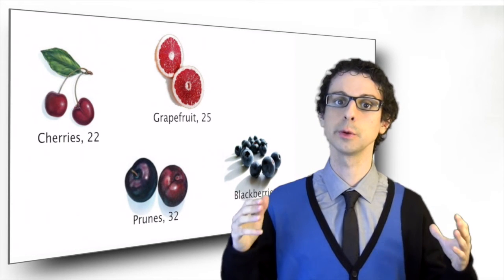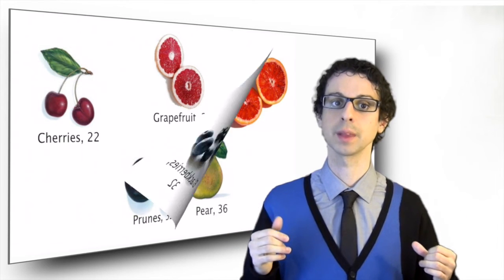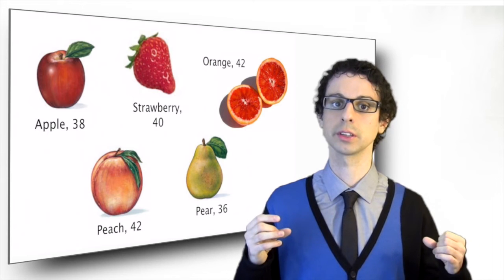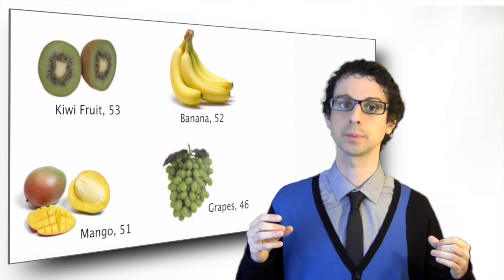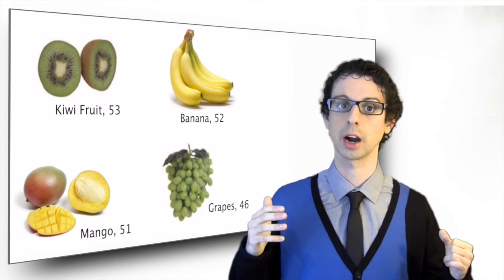Some fruits such as cherries, blueberries, prunes and grapefruit have a GI between 20 and 30. Apples, pears, peaches, strawberries, oranges between 30 and 40. Kiwi, mango, grapes and bananas between 40 and 50, but keep in mind that banana ends up having a high glycemic load because it contains a lot of carbs.